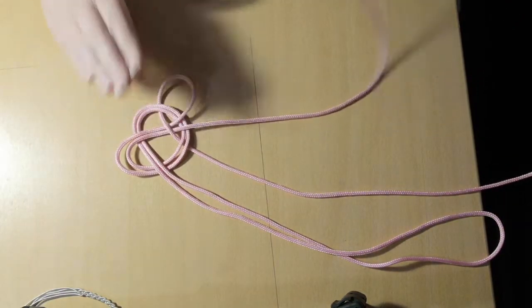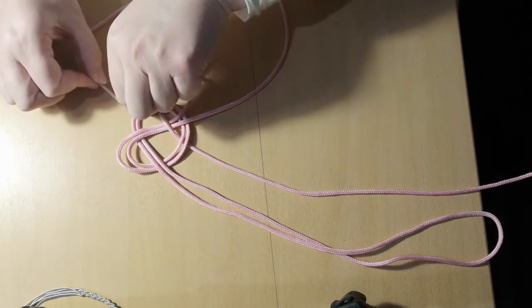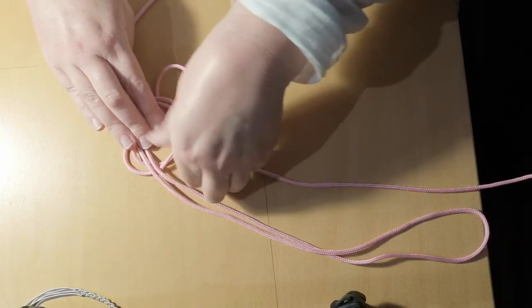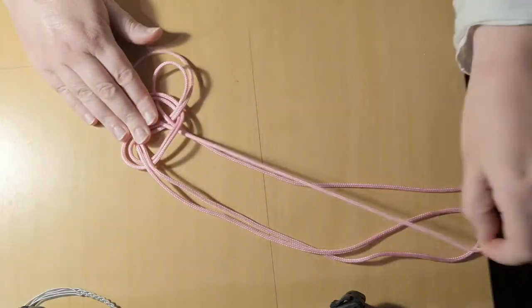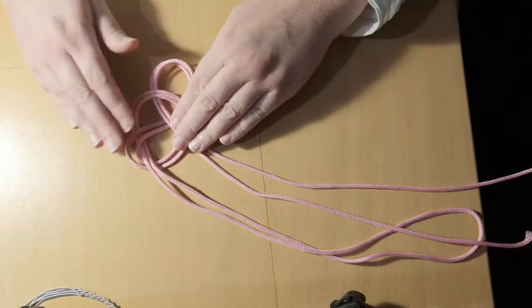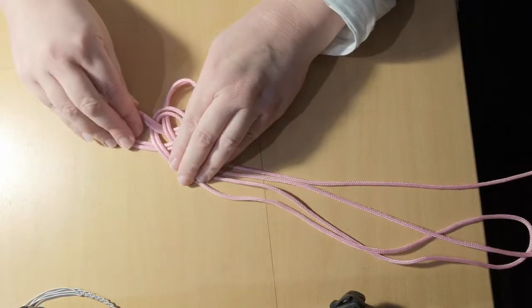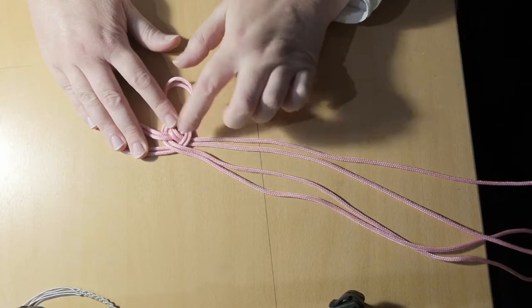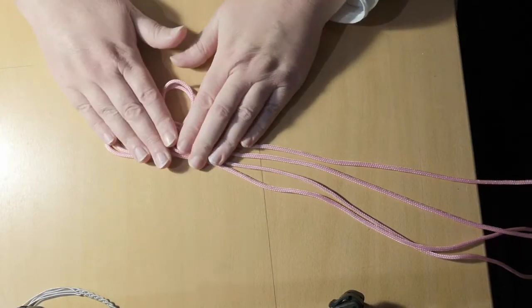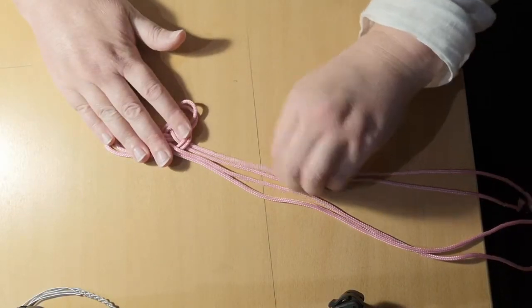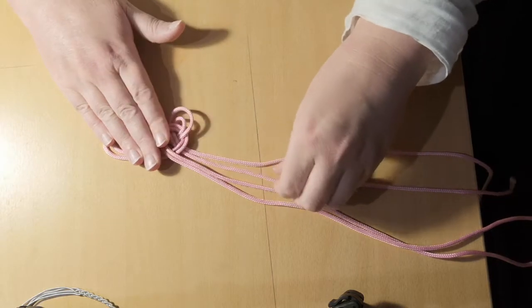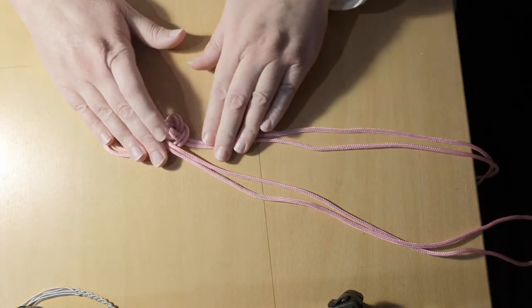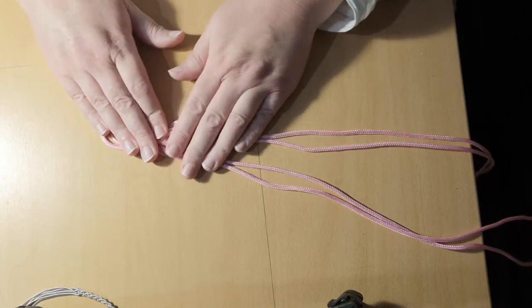And of course the other one follows and we are keeping it nice and flat. And now we are going to very carefully tighten this up. We start tightening in the lower knot and then we can carefully tighten the upper knot. I am basically just tightening it together.